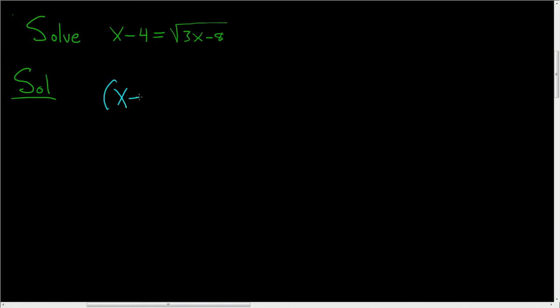So x minus 4 squared is equal to the right-hand side squared, so 3x minus 8, still in the square root, being squared.